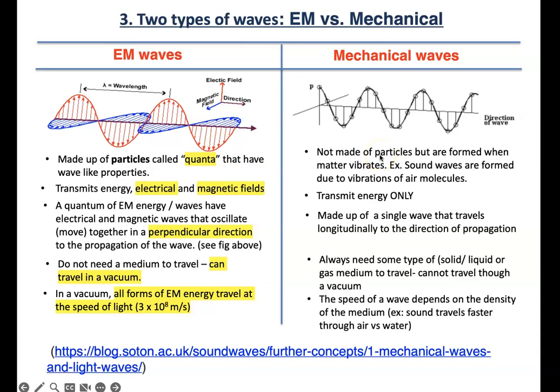However, mechanical waves are not made out of particles. They are formed when different types of matter vibrate. For example, sound waves are formed due to vibrations of air molecules. And these transmit energy electrical and magnetic fields. These only transmit energy.